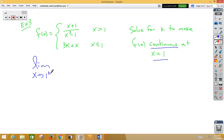Limit as x approaches 1 from the right side, x plus 1 over x squared minus 1, equal to the limit as x approaches 1 from the left side of 3k plus x.